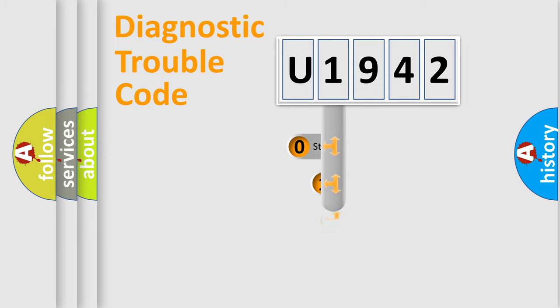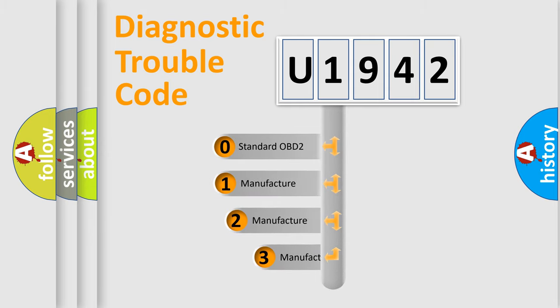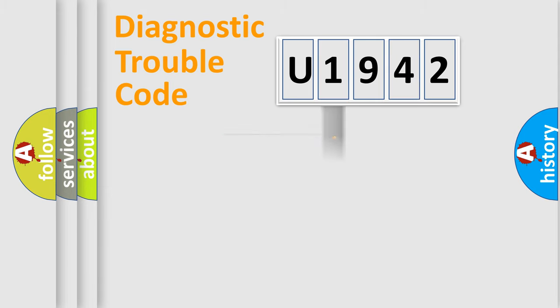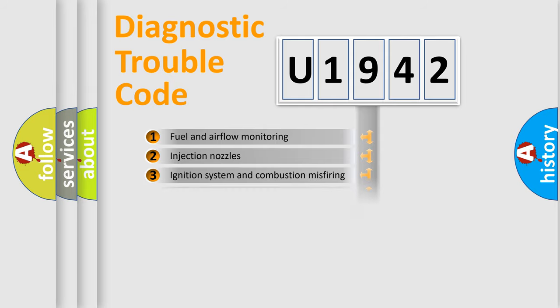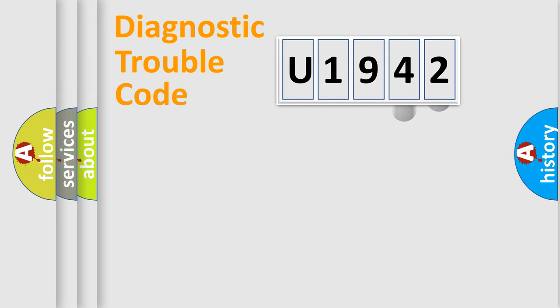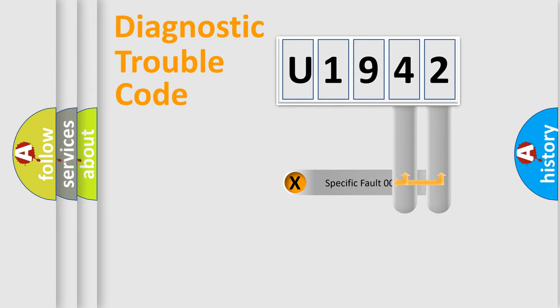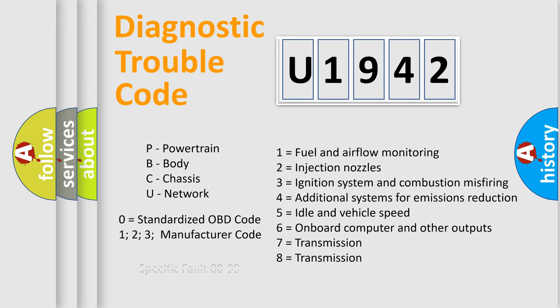This distribution is defined in the first character of the code. If the second character is expressed as zero, it is a standardized error. In the case of numbers 1, 2, or 3, it is a more specific car-specific error. The third character specifies a subset of errors. This division is valid only for the standardized DTC code, where only the last two characters define the specific fault of the group.